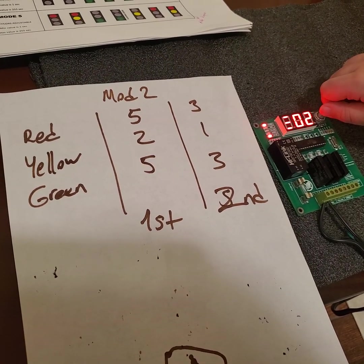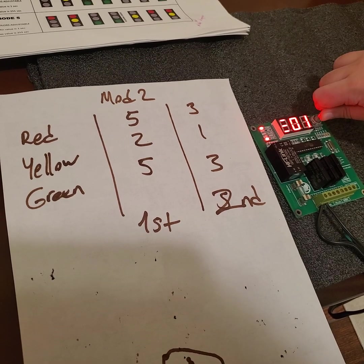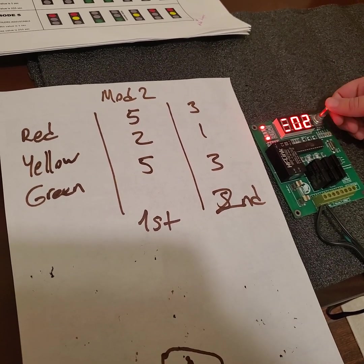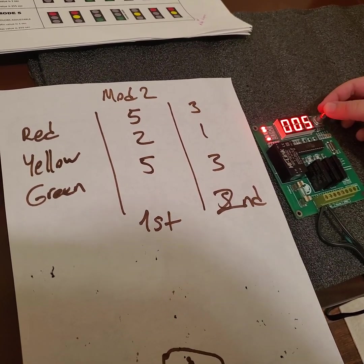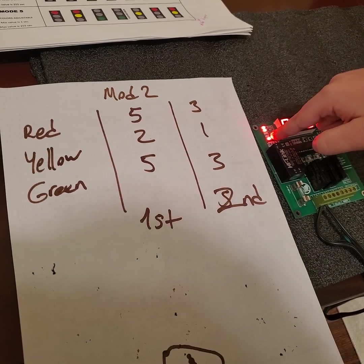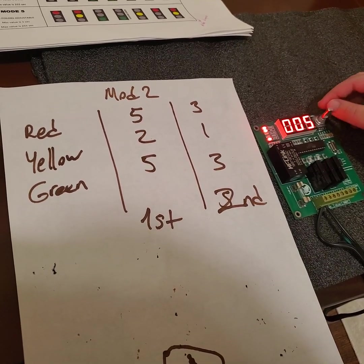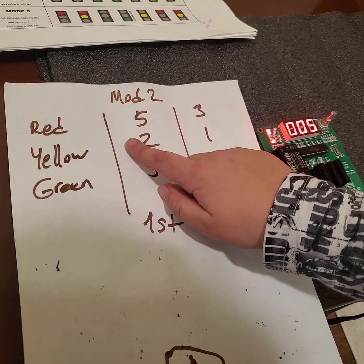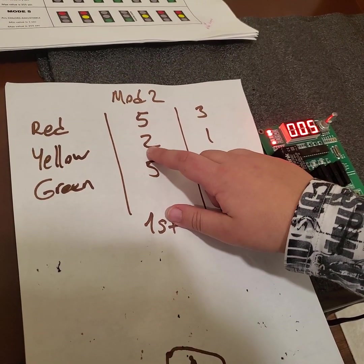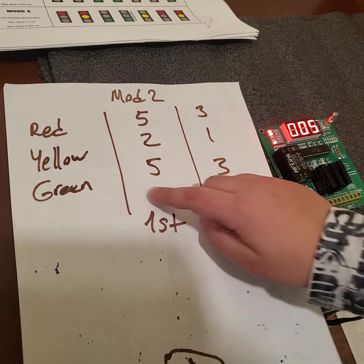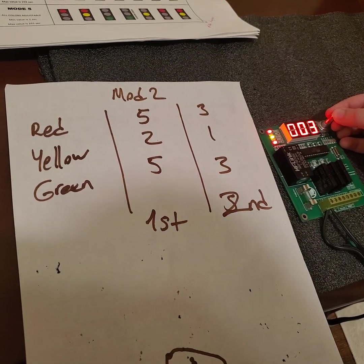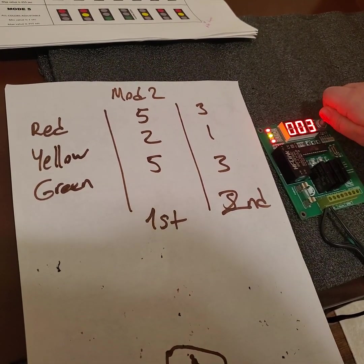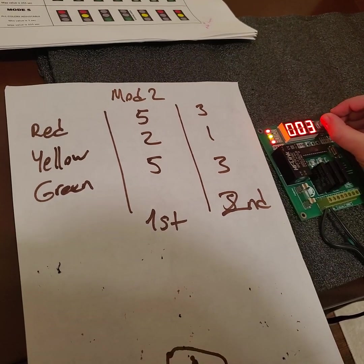It shows you mode 1, so you have to move it to mode 2 and press it. It shows you right here how many seconds you want to do it. Here we set 5 seconds for the red, 2 seconds for the yellow, and 5 seconds for the green.